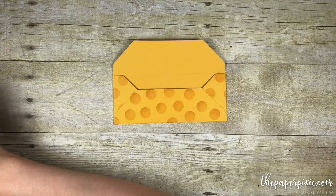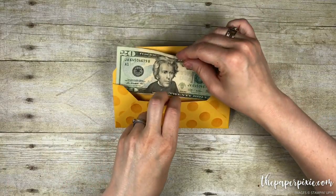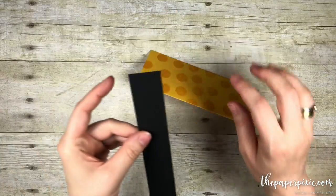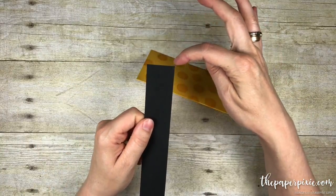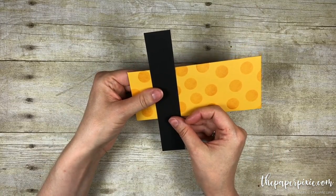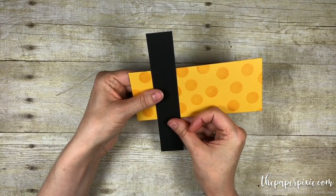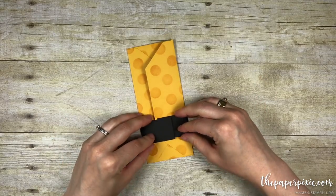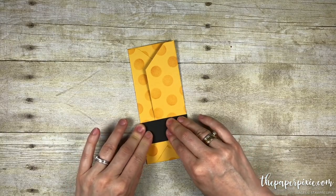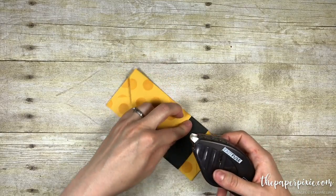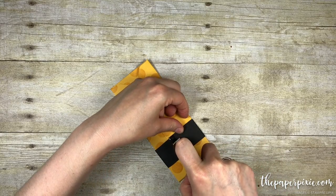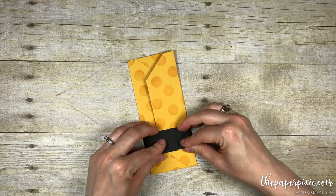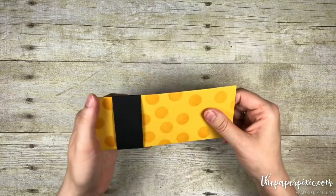We are going to add the money and then create a simple belly band. I have a piece of basic black card stock that measures one and a quarter by six and a half. We are just going to loosely wrap that around the envelope so that it will slide on and off easily. I am just going to add a little bit of Fast Fuse here. So there is the belly band.